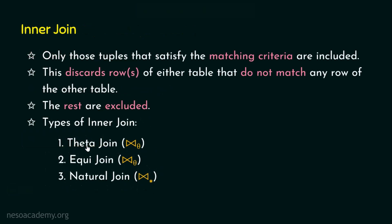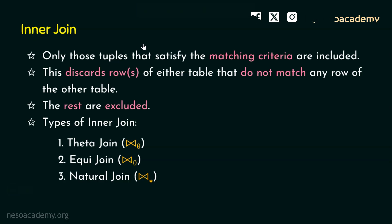In the last presentation, we focused on inner join. Let's quickly revisit inner join. Join means joining or combining two or more relations or tables. How this inner join is performed is that the matching tuples — as per the join condition, the matching rows are joined. Only those tuples that satisfy the matching criteria are included in the output relation and the non-matching rows are discarded. Only matching rows will appear in the output and non-matching rows will not appear in the output of the inner join. We have seen three variations of inner join: the theta join, the equi join, and the natural join.